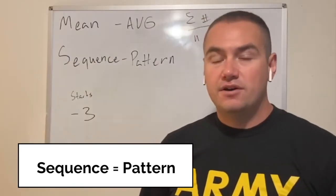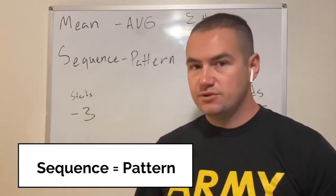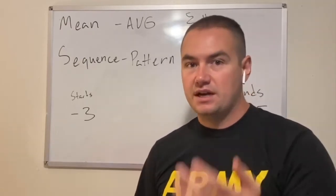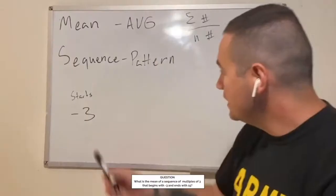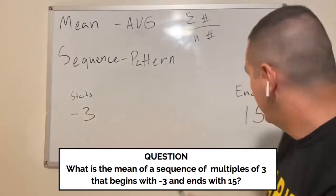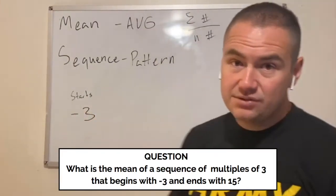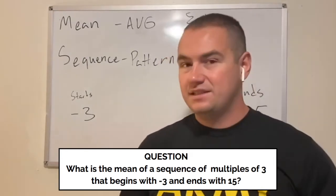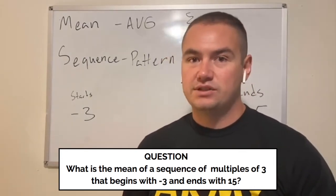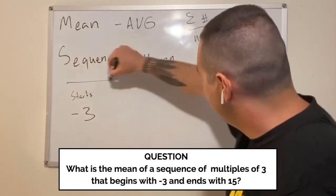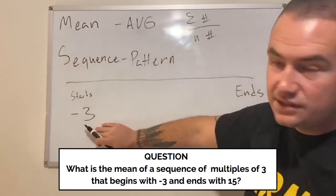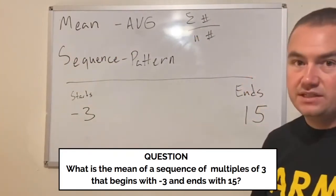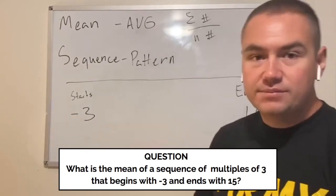The pattern of multiples of three, well, everybody knows the multiples of three: 3, 6, 9, 12. So that's that pattern. It starts at negative 3 and ends at 15. If you're my student and you're taking the test and you see this question and you have absolutely no idea how to answer this question, you will write at least this much. Starts at negative 3, ends at 15. And then you can start looking at the different options: A, B, C, D.